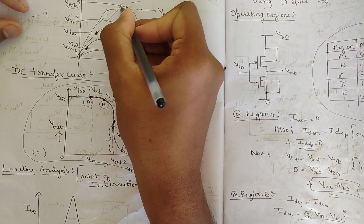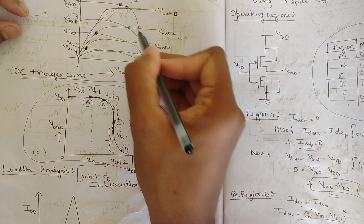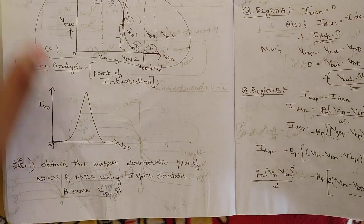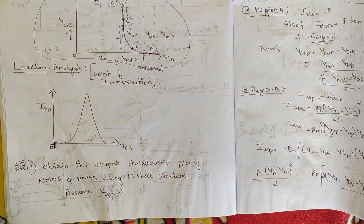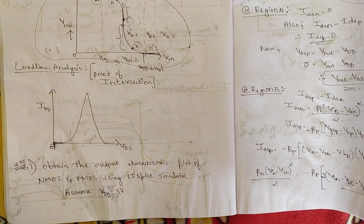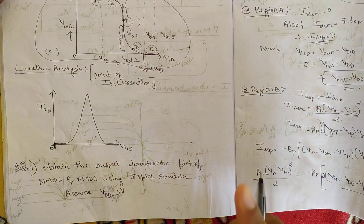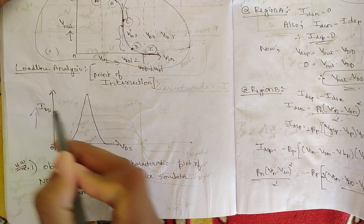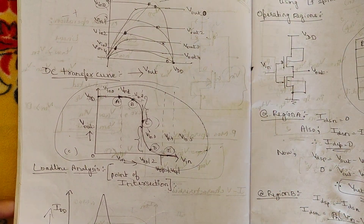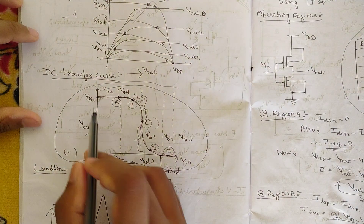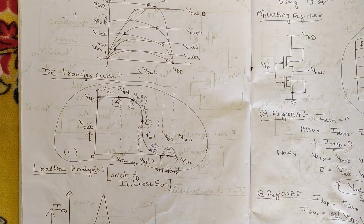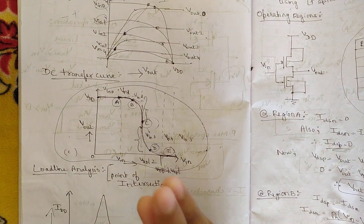Load line analysis is done by checking all points of intersection between the NMOS and PMOS curves. By connecting all intersection points we obtain the IDD versus VDS load line plot. If we want the DC transfer curve, that is a separate and very important plot where drastic changes in voltage can be observed.